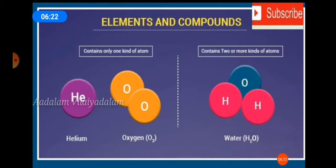Next, elements and compounds. What is an element? An element is a pure substance that cannot be split into a simpler substance by physical or chemical methods. According to modern atomic theory, an element is made up of the same kind of atoms. Examples: helium, oxygen, copper, hydrogen, etc.